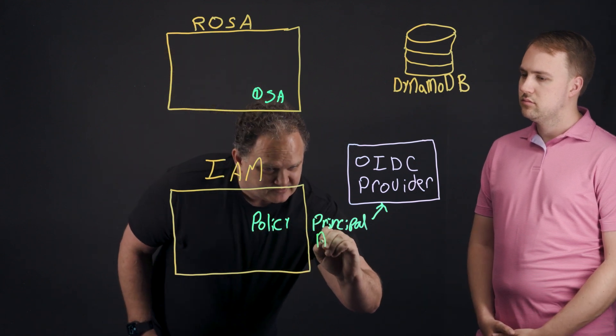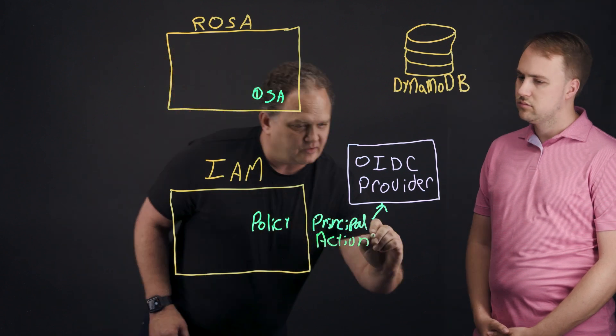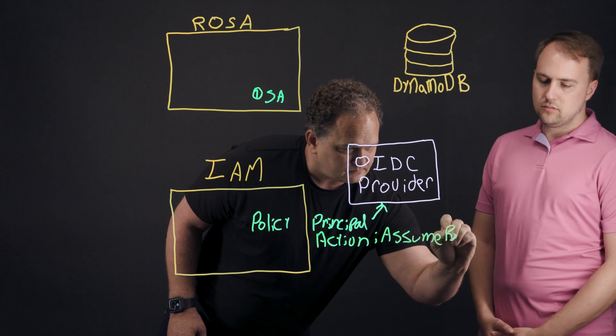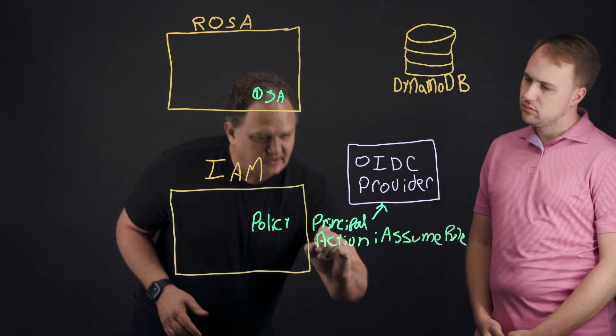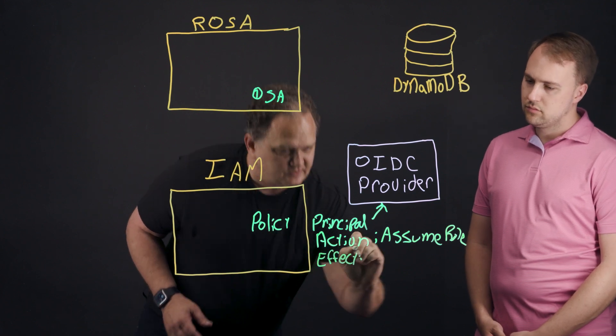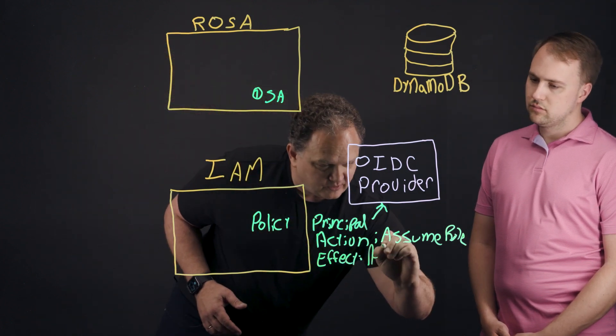Also in a policy, we have an action. In this case, we're going to have assume role. So we're going to have the OIDC provider assume a role that we're going to create in a minute. And then we have, what can it do? So there's an effect. And this typically would be allow or deny. So in this case, we want to allow the OIDC provider to assume a role.